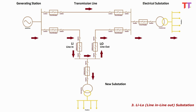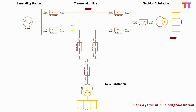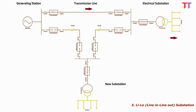This line in and line out layout is called LILO. Power flows in the same direction as before, adding the extra load of the newly constructed substation. This type of layout is more reliable than the previous two layouts, because in case of fault on one line, the other line continues to supply power, and vice versa. However, outage or breakdown of both lines at the same time does affect the connected load.